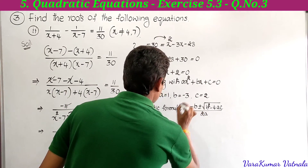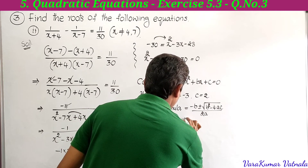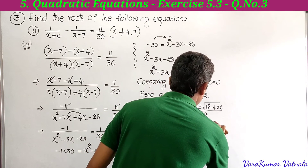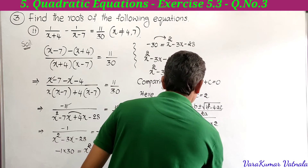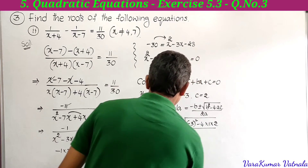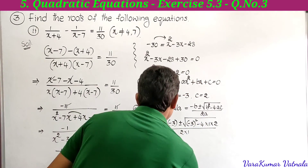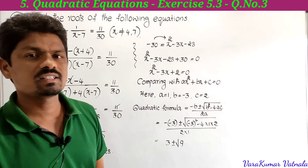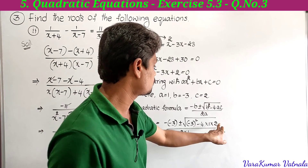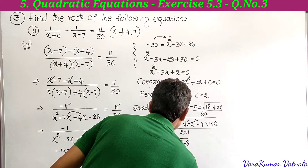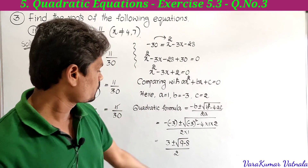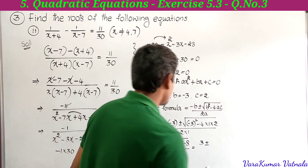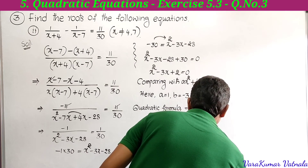Substituting: minus of minus 3 plus or minus square root of minus 3 whole squared minus 4 into 1 into 2, divided by 2 into 1. Simplifying: plus 3 plus or minus square root of 9 minus 8, divided by 2. That gives 3 plus or minus square root of 1, divided by 2. Since root 1 is 1, we have 3 plus or minus 1, divided by 2.